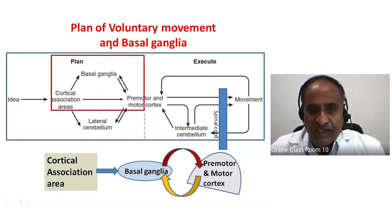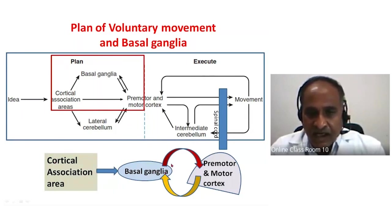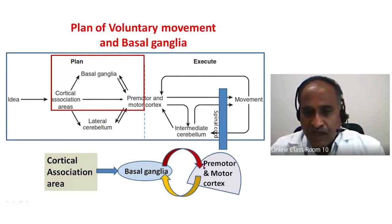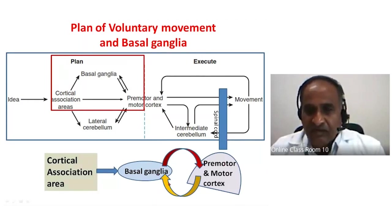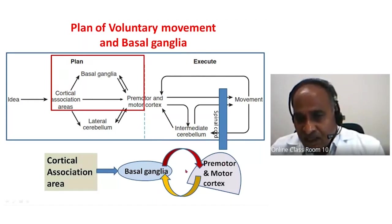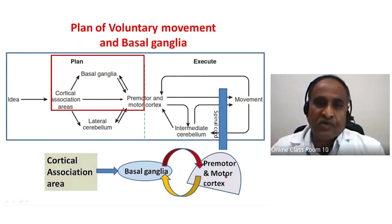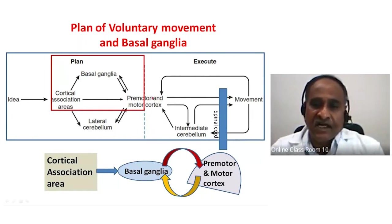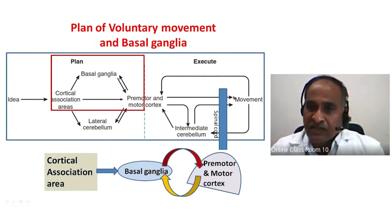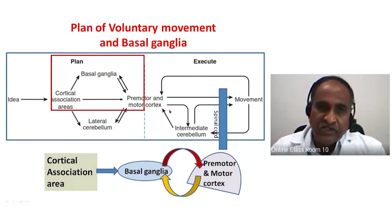The cortical association area sends information to the basal ganglia, and the basal ganglia in turn communicates with the premotor cortex. The premotor cortex gives back information to the basal ganglia, which then reaches the motor cortex and subsequently the motor neurons of the spinal cord — that is the plan of voluntary movement.